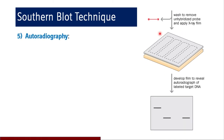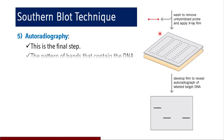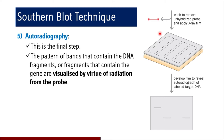The final step is autoradiography — detection of the presence of a particular sequence of interest. The pattern of bands that contain the DNA fragments of interest are visualized by virtue of radiation. If fluorescent probes have been used, fluorescence helps identify the DNA fragments in southern blot technique.